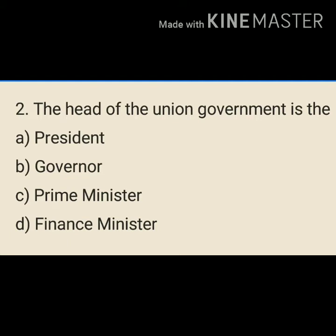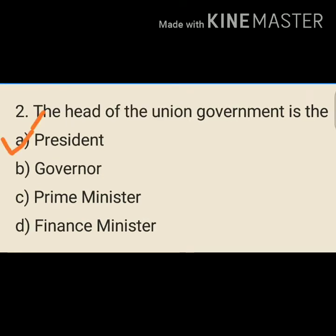Second question is: The head of the union government is the — A. President, B. Governor, C. Prime Minister, D. Finance Minister. Our answer will be A. President. The head of the union government is the President.